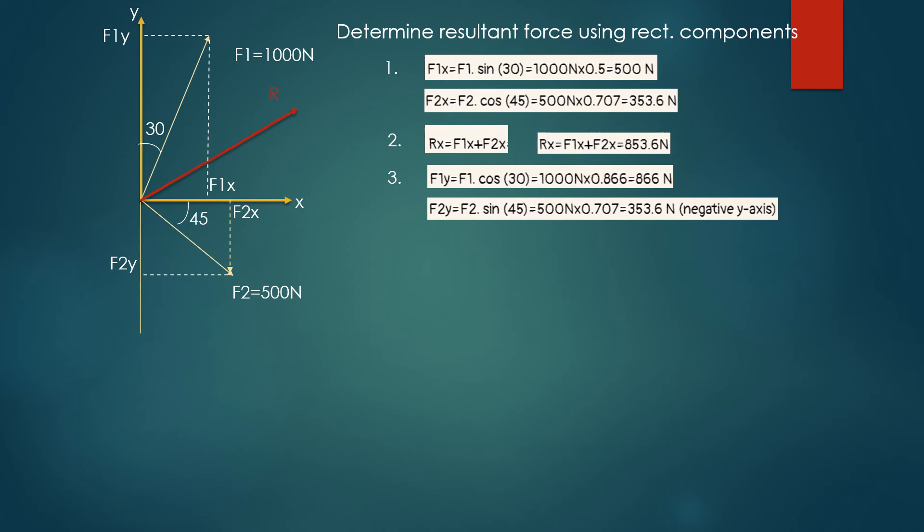As already explained, Ry, the y-component of the resultant force, equals F1y minus F2y, which makes 512.4 newtons along the y-axis.